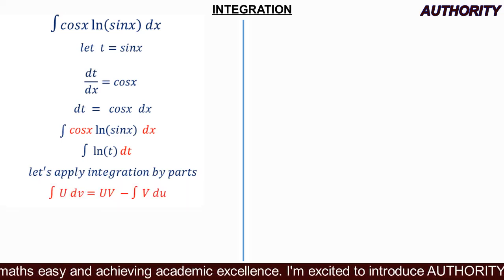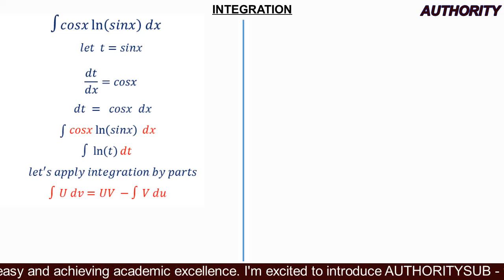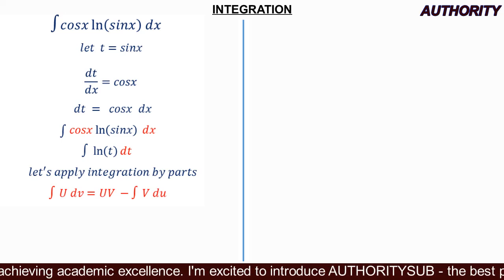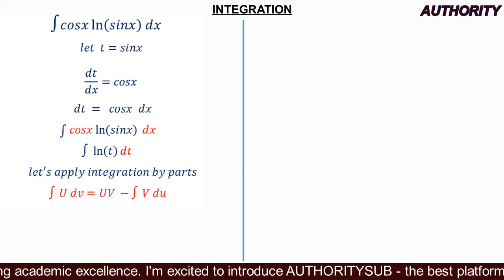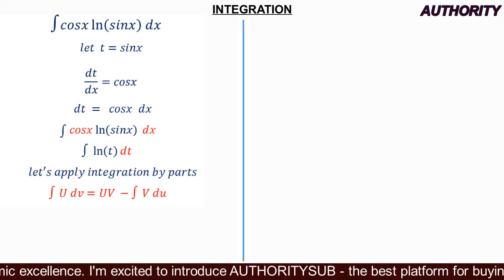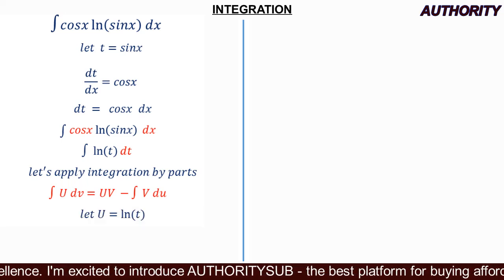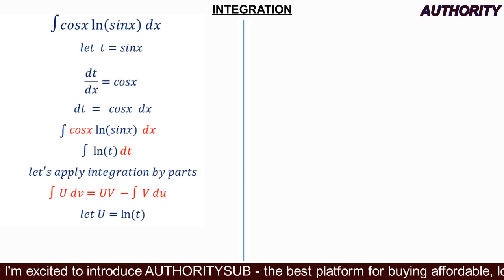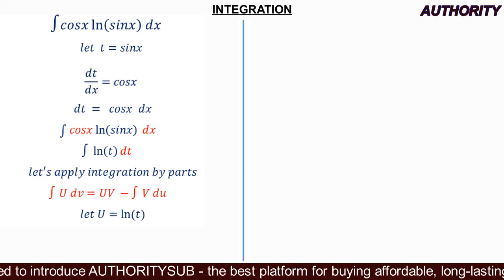The integration by parts formula is: ∫u·dv = u·v − ∫v·du. We have a single term ln(t), so we choose u = ln(t).